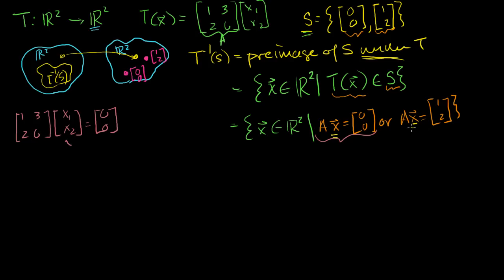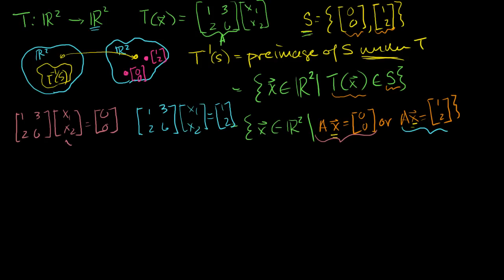Now that's not the only one. We also have to solve the second equation. So the pre-image of S under T is going to be all of the solutions to the first equation, plus all of the solutions to 1, 3, 2, 6 times (x1, x2) equal to (1, 2). We could just solve this with an augmented matrix. The first augmented matrix would look like 1, 3, 2, 6 | 0, 0. And the second augmented matrix would be 1, 3, 2, 6 | 1, 2.